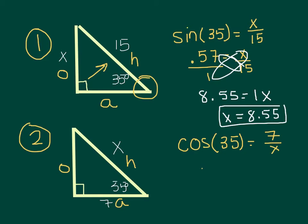So the cosine of 35 is 0.82, which equals 7 over X, and this is the time when cross multiplication is really handy. I'll multiply X times 0.82, so 0.82X, and that'll equal 7 times 1, so it equals 7.